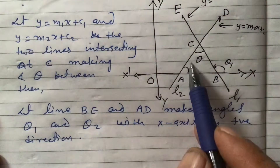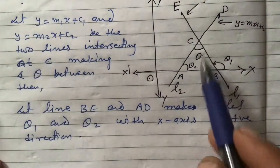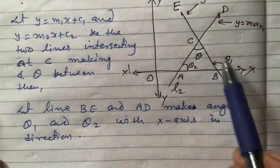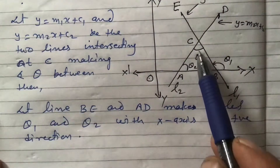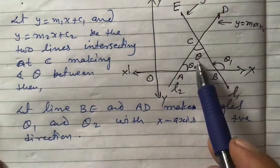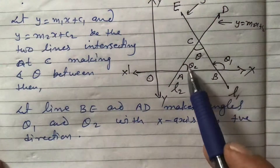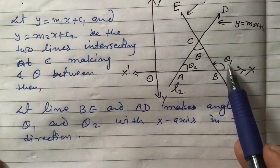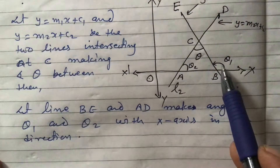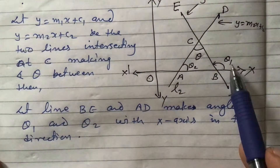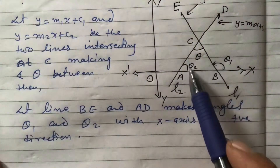After explaining this figure, we have got a triangle here. In this triangle, theta 1 is the exterior angle of the triangle and theta and theta 2 are the two non-adjacent interior angles. The sum of the two non-adjacent interior angles is equal to the exterior angle.